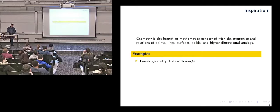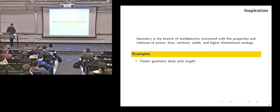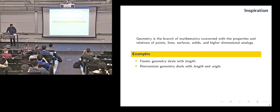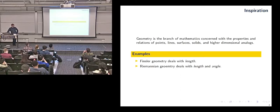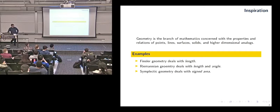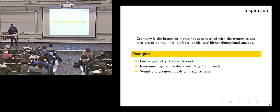There are many, many different kinds of geometry that ask different questions. I'll talk about three: Finsler geometry, where the only thing you care about is measuring length. Riemannian geometry deals with both length and angle. And symplectic geometry deals with areas as its fundamental thing. If you've seen Lagrangian mechanics, that's entirely Riemannian geometry. Hamiltonian mechanics is entirely symplectic geometry.